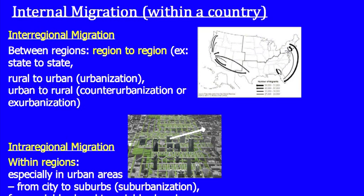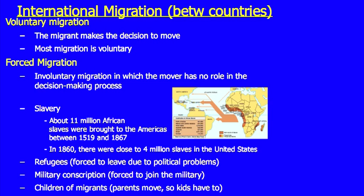International migration is between countries. It may be voluntary, where you choose to move, or forced, where someone else makes that decision for you. Forced migration includes slavery, refugees fleeing political persecution, military conscription, and children of migrants who must move with their parents, including in situations of divorce or separation where a child has no choice in the matter.